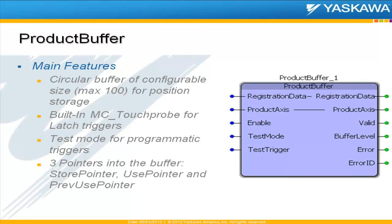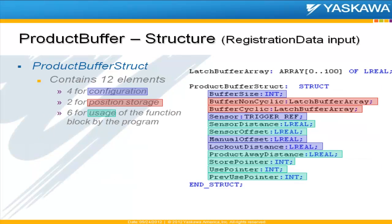This block has an input called registration data. Registration data is of a certain data type called a product buffer struct. Let's take a moment to look at the product buffer struct. The structure contains 12 elements, and four of them are for configuration.